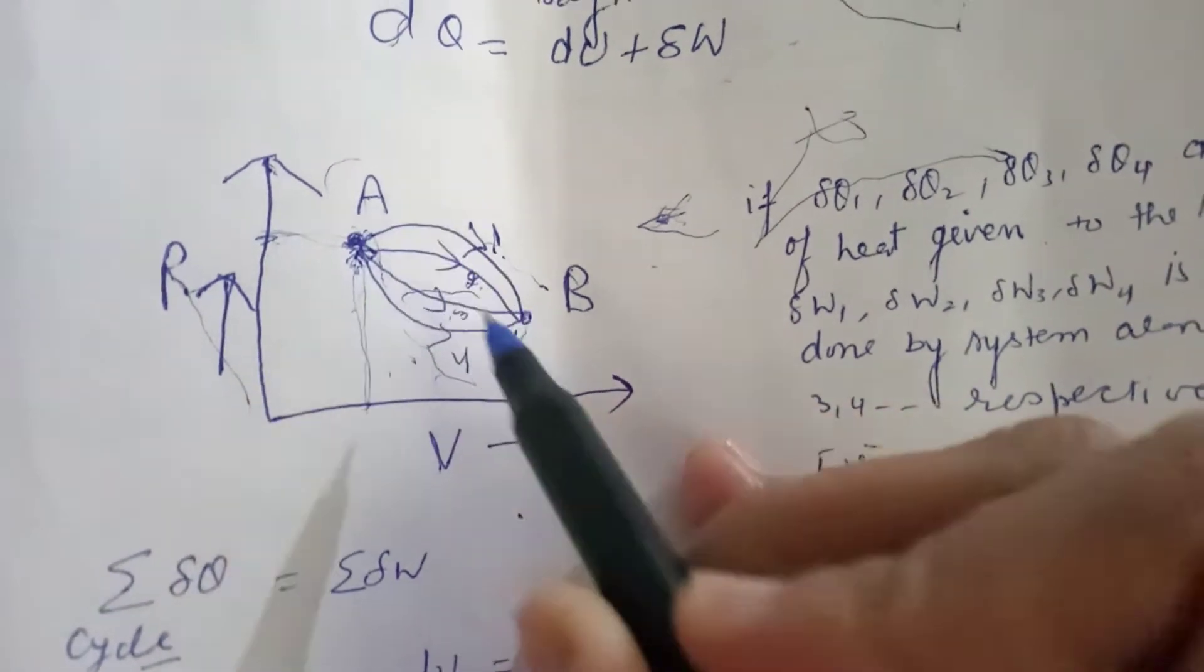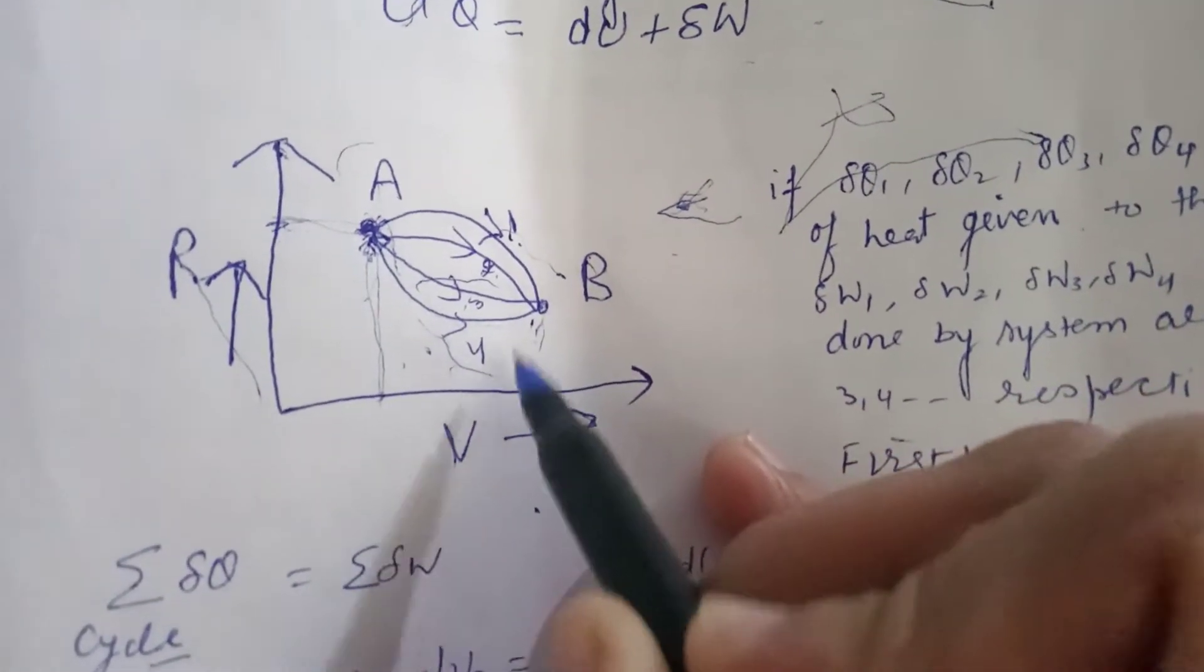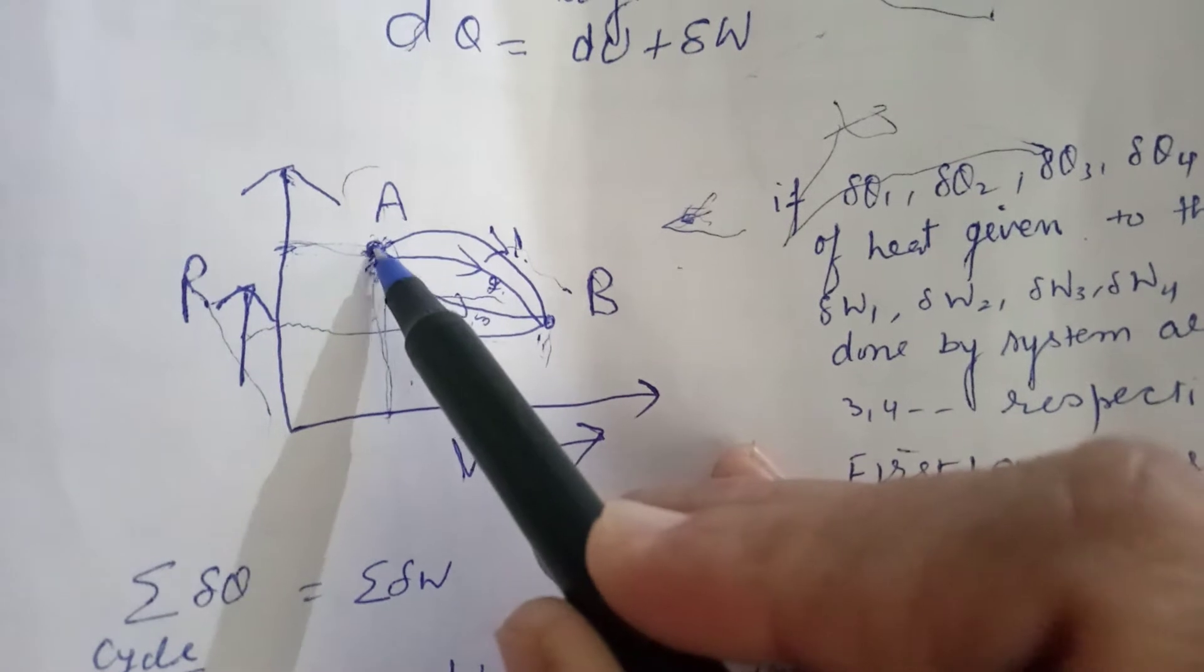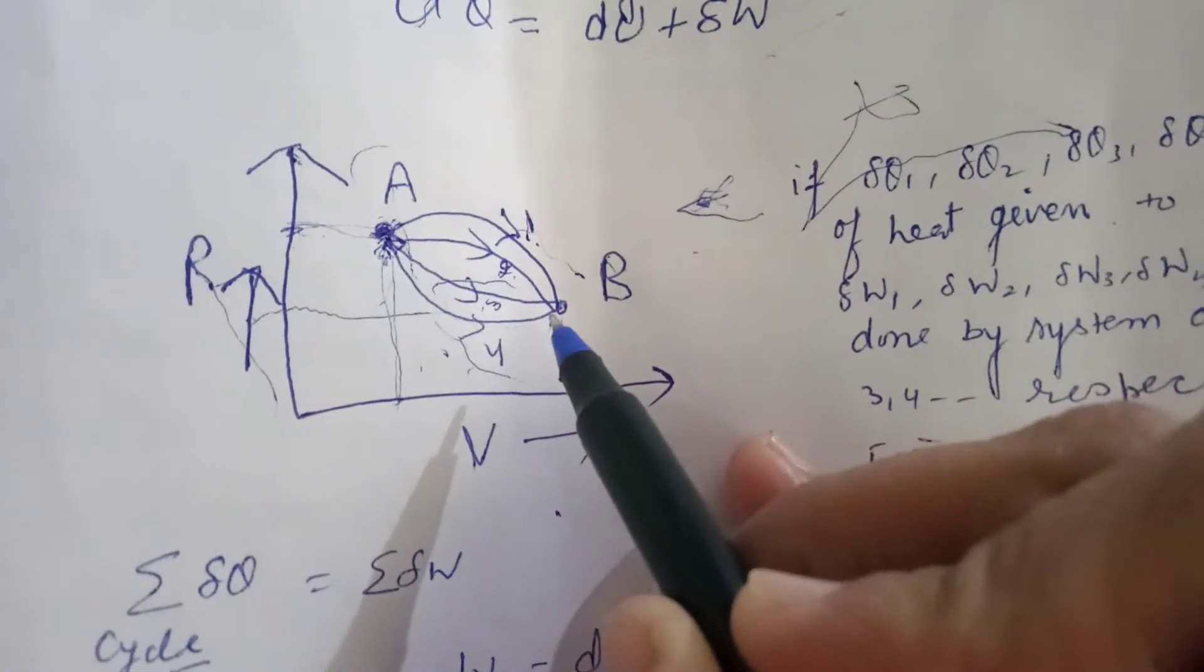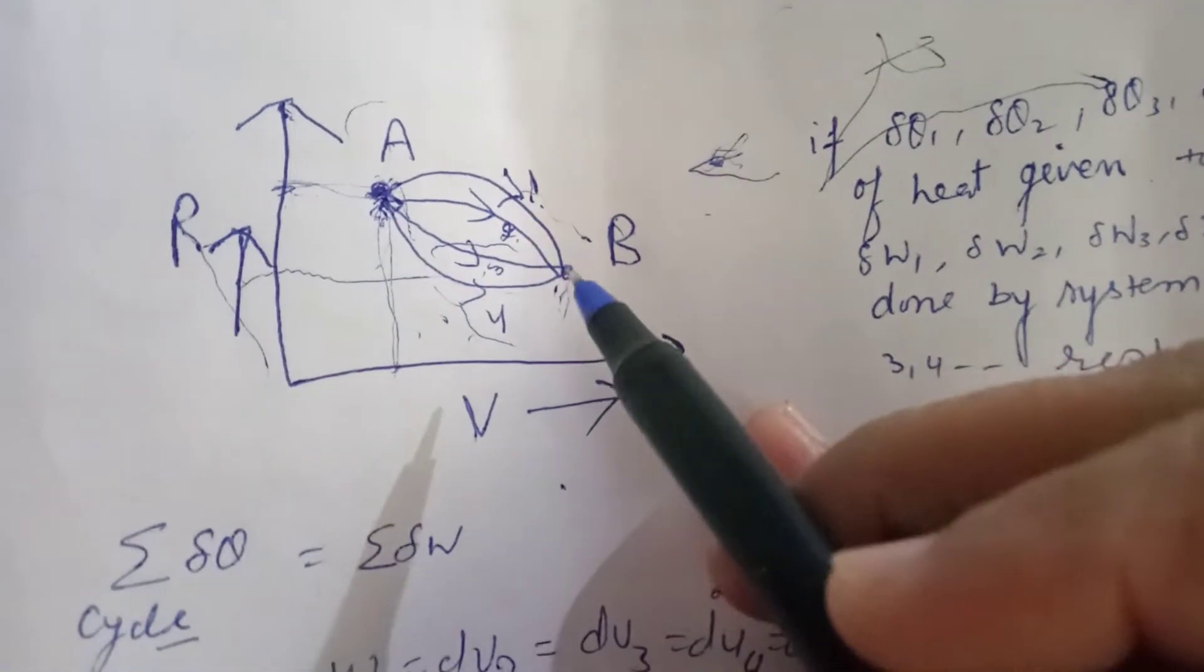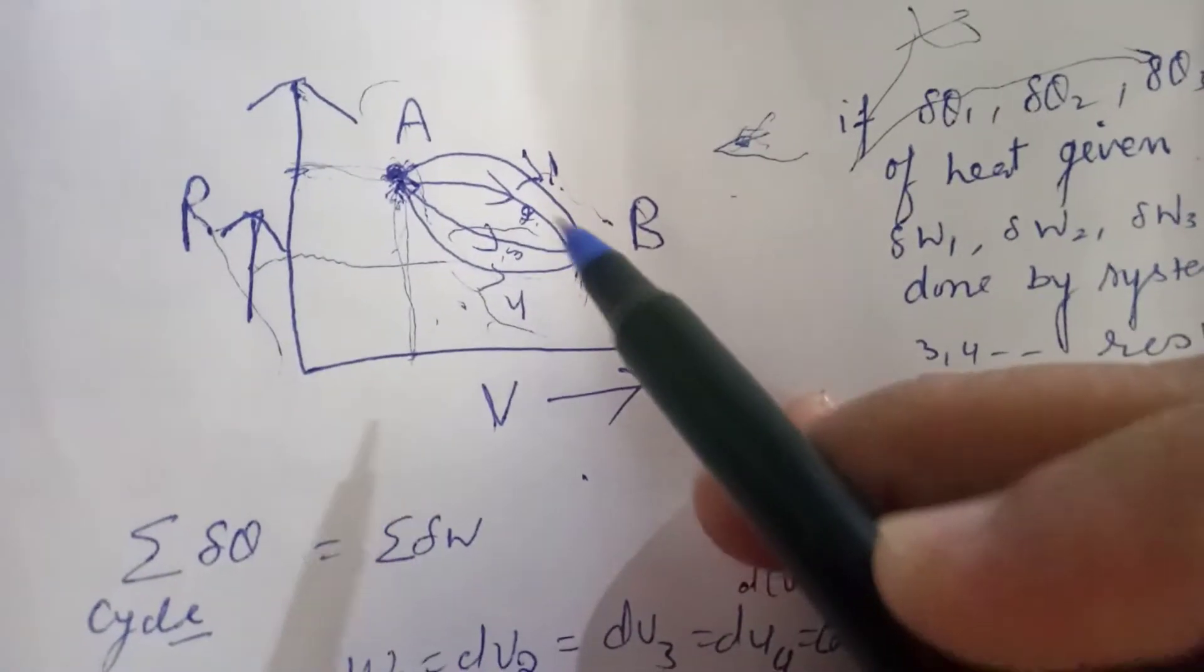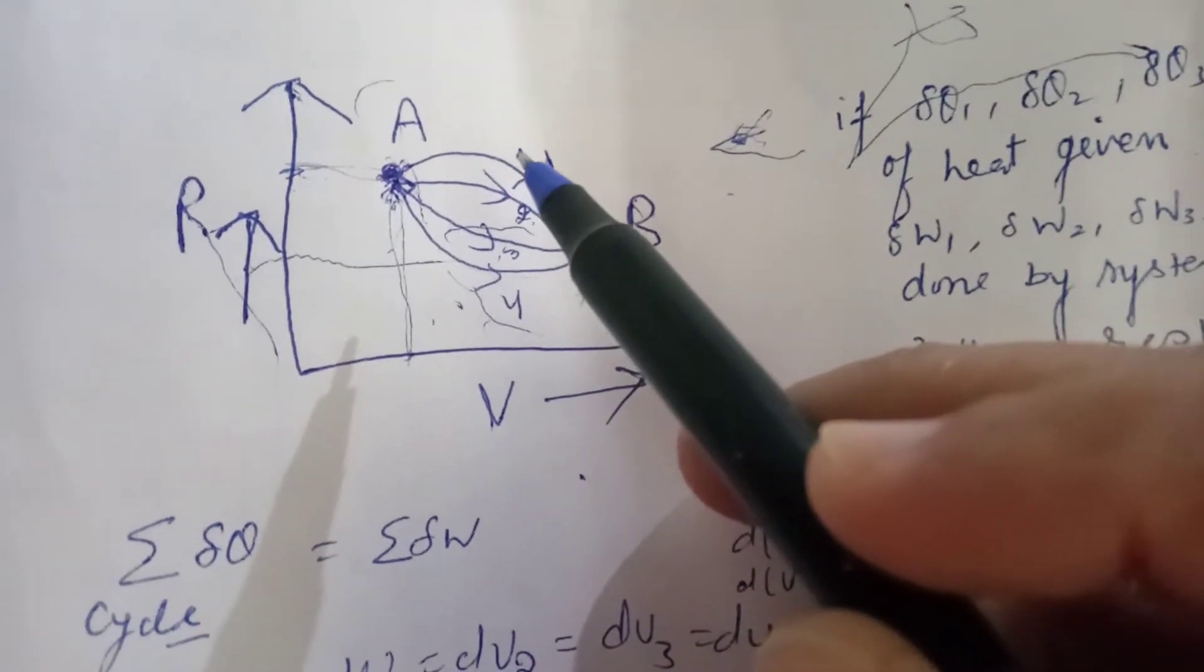The final position for the thermal system is B, having a different volume and pressure. To go from position A to B, the thermal system can follow various paths. If DQ1 amount of heat is given